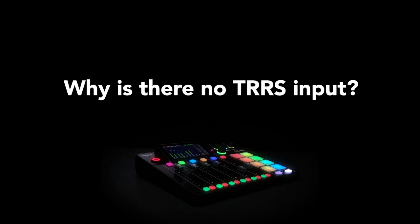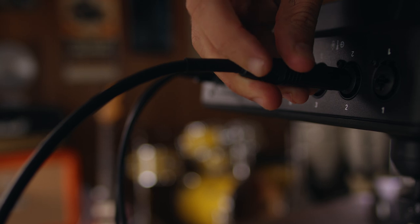Why is there no TRRS input? Everything you could do with the TRRS inputs on the original Rodecaster Pro you can actually do with the Rodecaster Pro 2 using the USB and TRS inputs. For example, smartphones can be connected using the USB inputs, and the Rodecaster Pro 2 is even MFI certified for seamless connection to iOS devices. Outboard equipment like keyboards, DJ decks, and other line level devices can be connected via the XLR TRS inputs on the back, and you can have two stereo devices connected using these inputs.